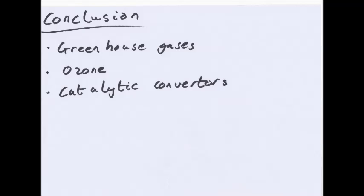So, conclusion. All you really need to know is about the greenhouse gases. The three main ones: water vapour, carbon dioxide and methane. Ozone, which is very important to helping the planet maintain a stable temperature, and this is at the troposphere. You do not want it at low levels. And catalytic converters, which convert toxic gases into less toxic ones.